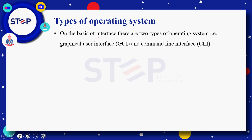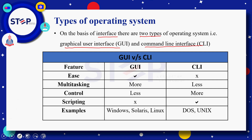Types of operating system — interface کی base کے اوپر ہمارے پاس دو types کی operating system ہیں: ایک GUI based operating system یعنی Graphical User Interface based operating system، اور اس کے علاوہ CLI based operating system۔ ان دونوں کے اندر جو main differences ہیں وہ ہم یہاں discuss کریں گے — GUI vs CLI۔